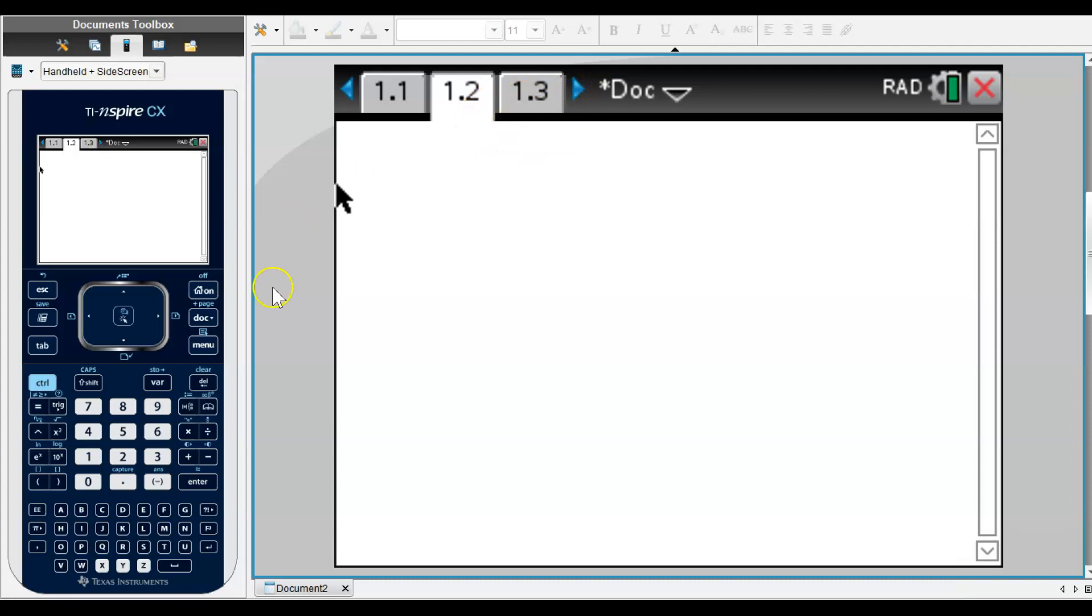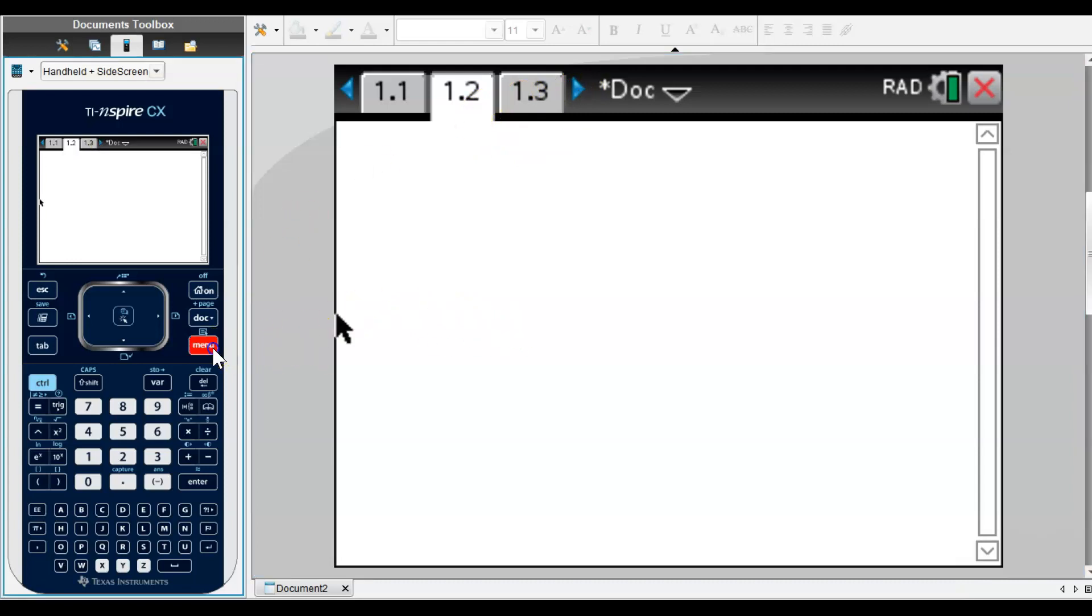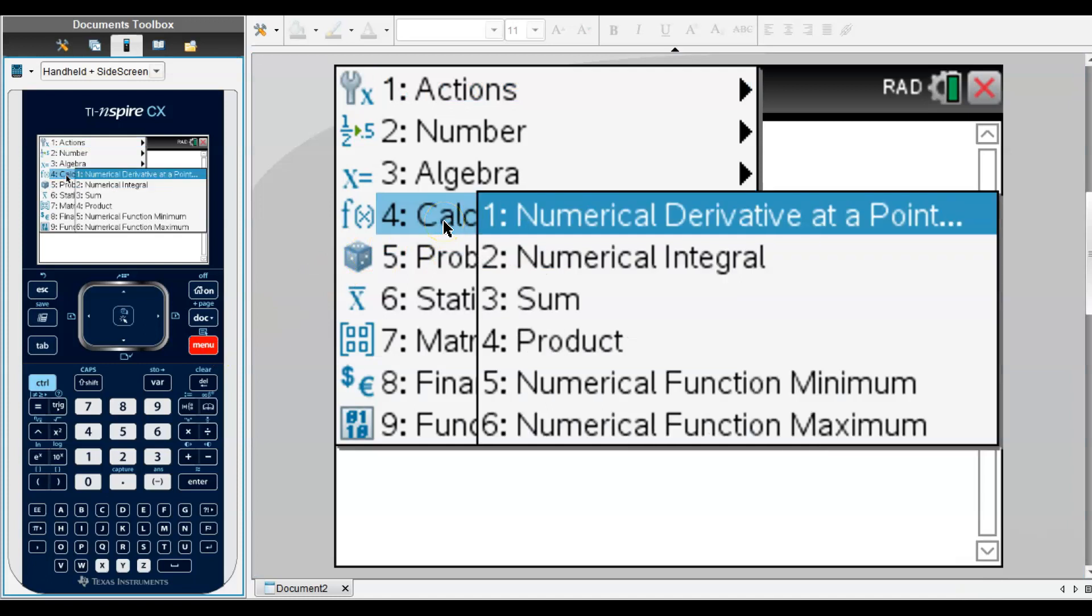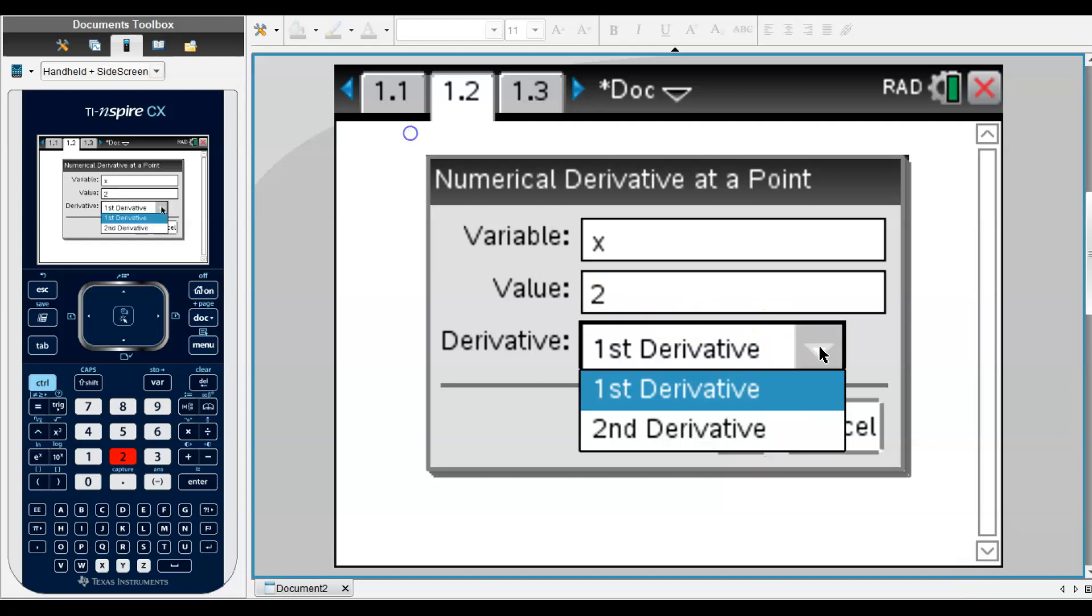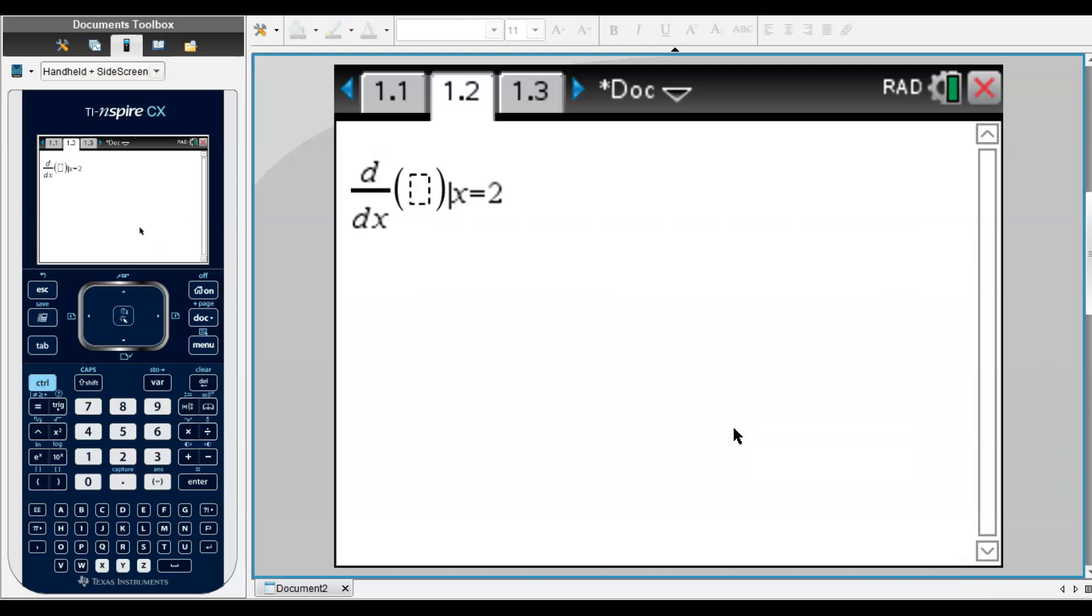I'm going to click Menu, Calculus. Notice that it says numerical derivative at a point. I click this and it asks what variable you want to calculate the derivative for—we say x. Then it asks what value. For this problem, they want the derivative at 2. We want the first derivative, so we say okay. Notice here it gives us d/dx of (with a blank space) at x = 2. Here's where we enter our function.